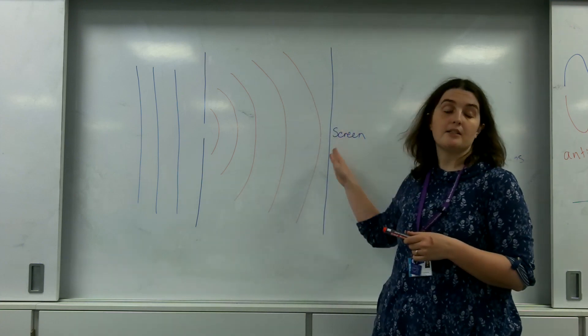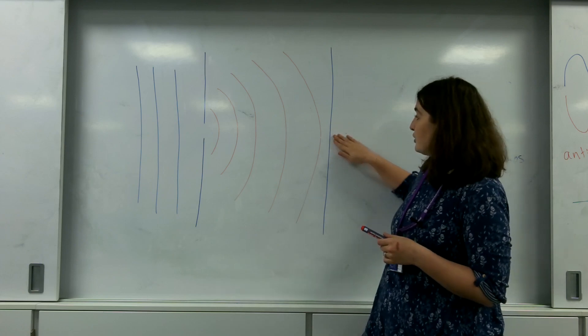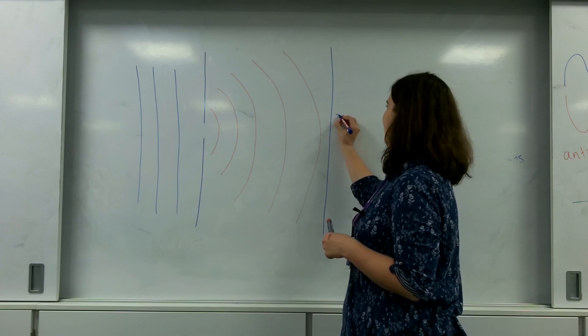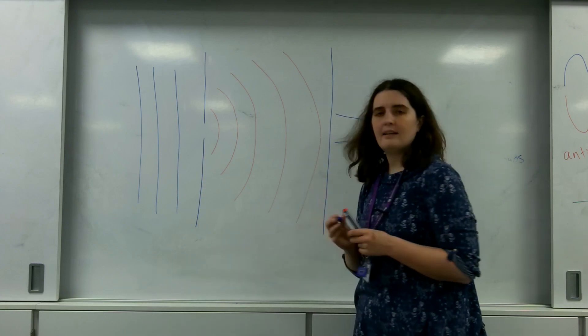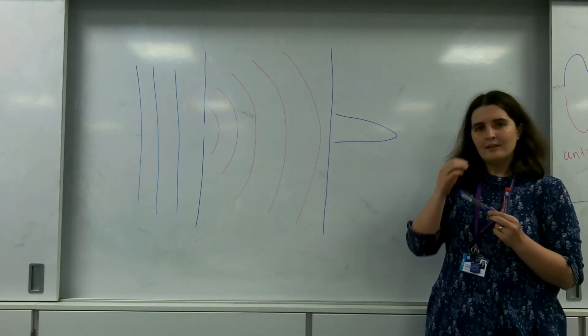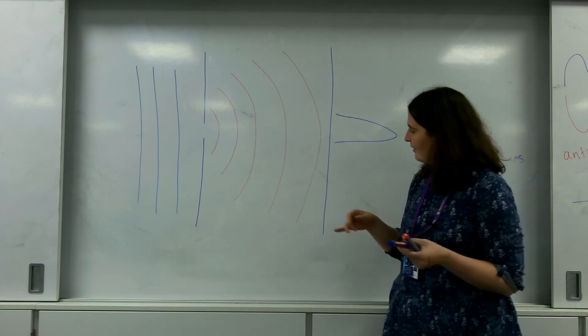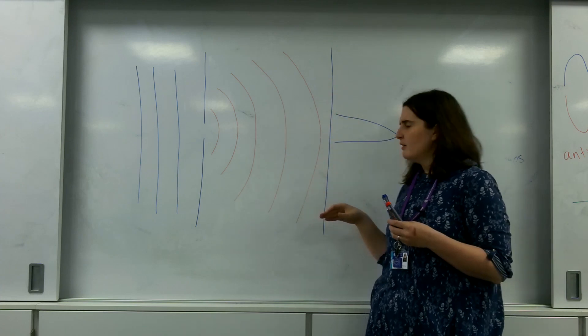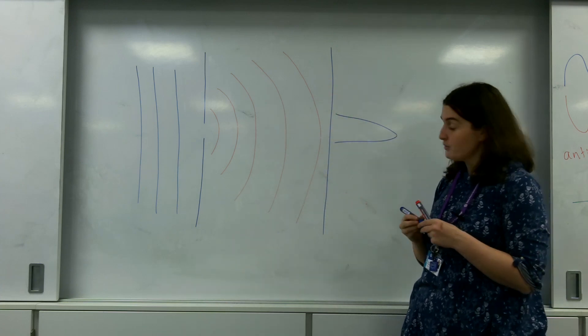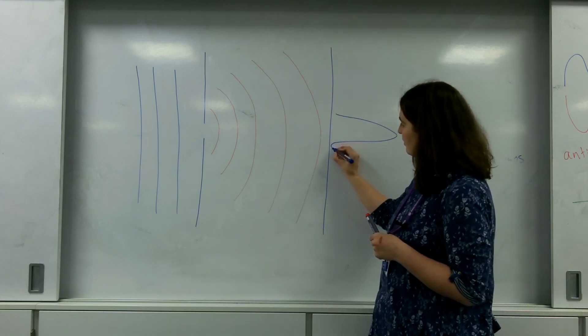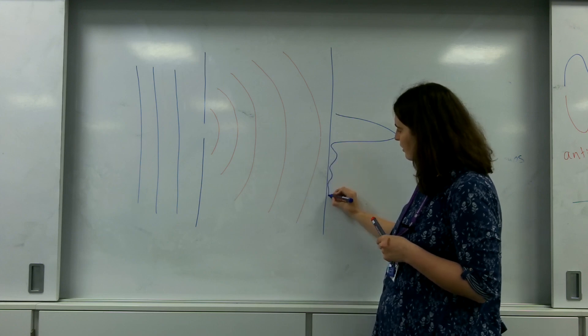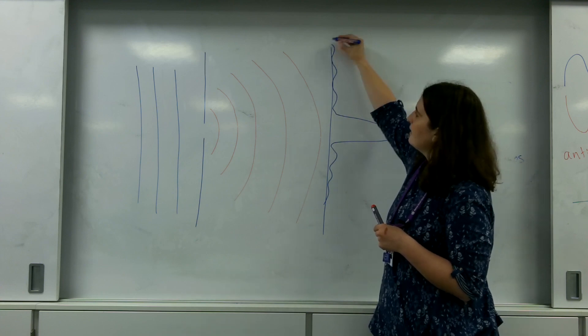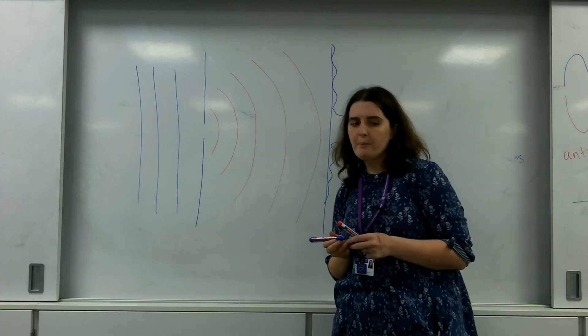Now this is the screen, this is the wall here. And as you may guess, you would get a really big bright bit right here. But as we've got a curve going on, what happens? We start getting some interference and we start seeing these dark and bright bits.